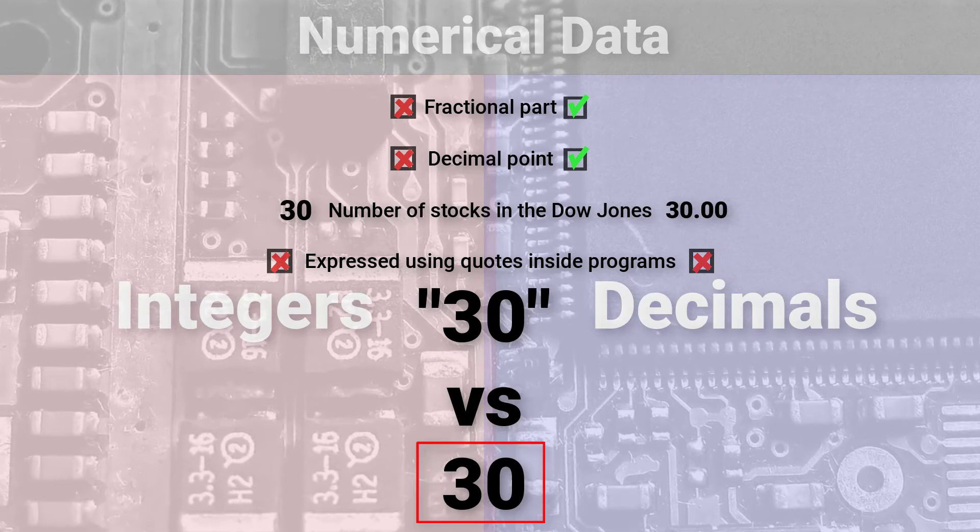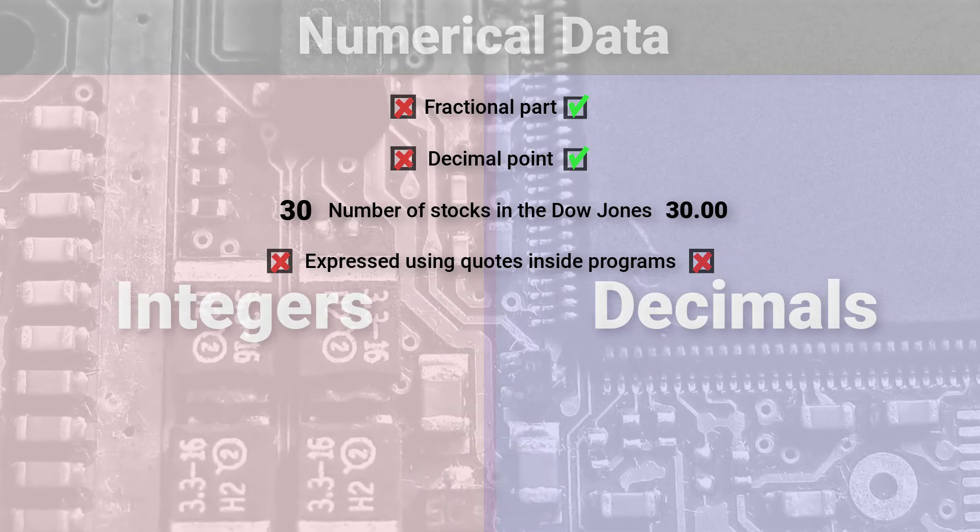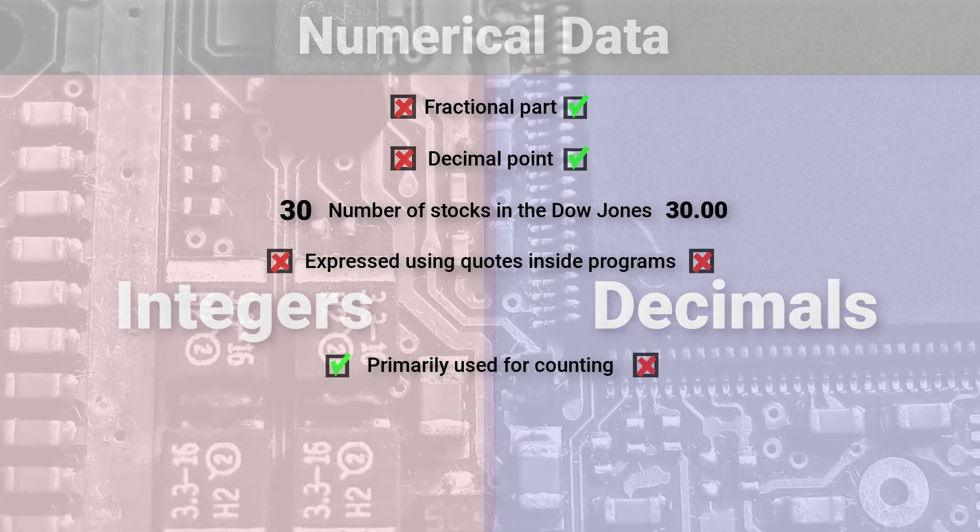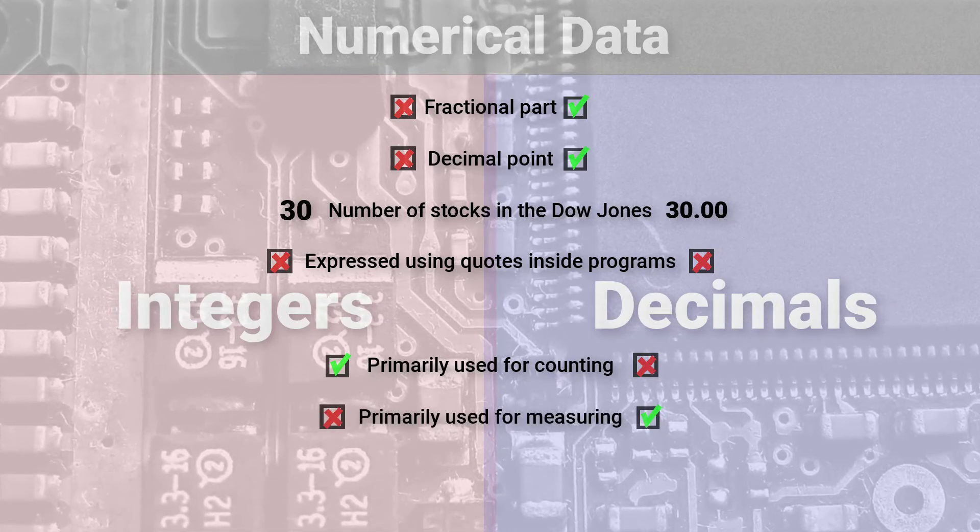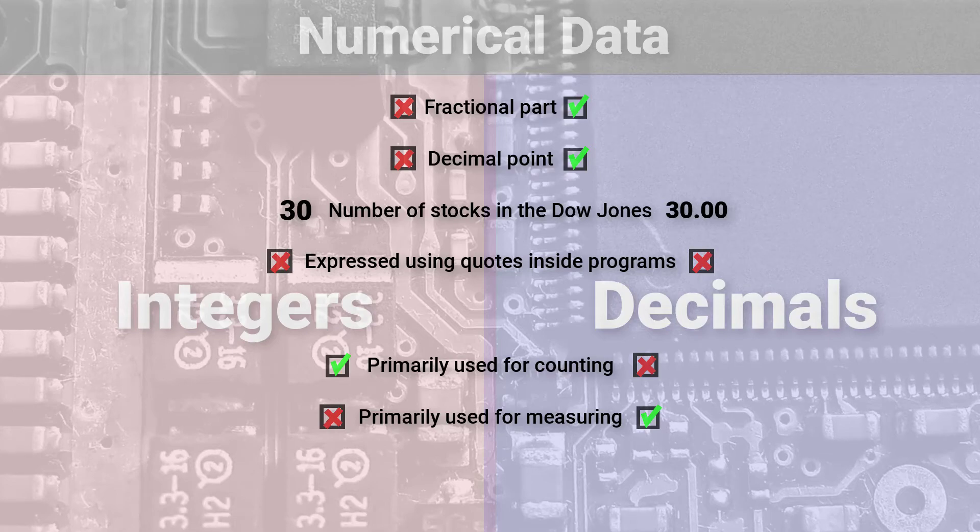In the real world, we use integers to count things and we use decimals to measure things. And these acts of counting and measuring allow us to make sense of the world.